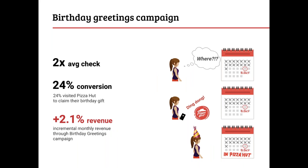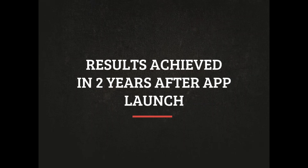We also have the birthday greeting campaign. Pizza Hut used this to give double points on the average check during a customer's birthday, and it had a high conversion rate of 24% with a 2.1% increase in revenue. This campaign obviously doesn't produce the same results as others since not everyone's birthday falls on the same day, but it's a great way to encourage customers to come in and redeem a voucher — just a nice little incentive to keep customers coming in.